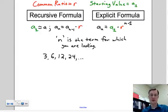For example, if you had 3, 6, 12, 24, something basic. What you can do - I'm going to look for the starting value. The starting value is 3. The common ratio: 6 divided by 3 is 2, 12 divided by 6 is 2, 24 divided by 12 is 2. So if you have these, you can do both formulas.